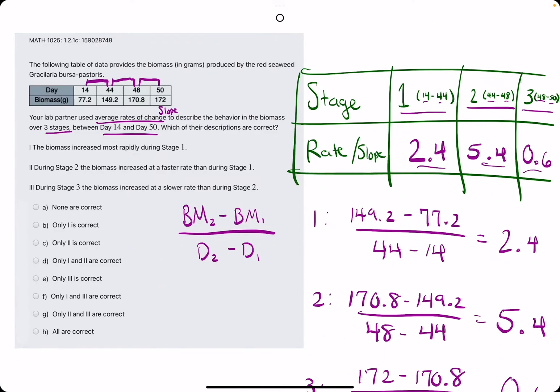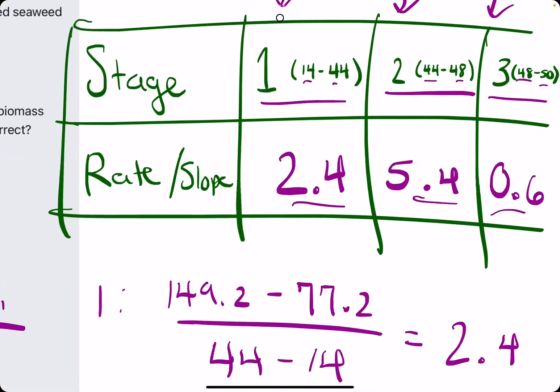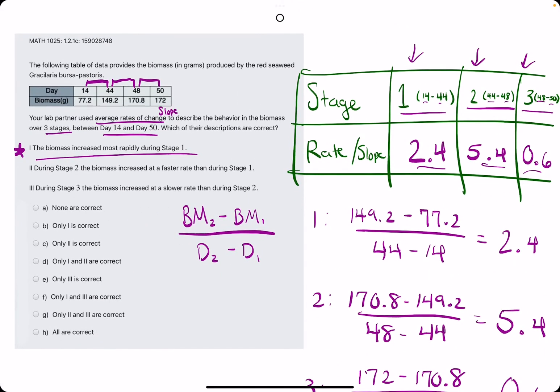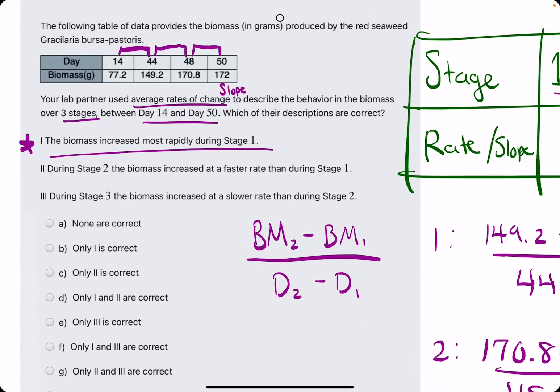All right. So we have our three rates of change for our different stages, respectively. Let's check out statement number one. Biomass increased most rapidly during stage one. This is false because 2.4 is not the largest rate of change. 5.4 is the largest. So if it instead said increase most rapidly during stage two, that would be correct. But it does not. So this is false.